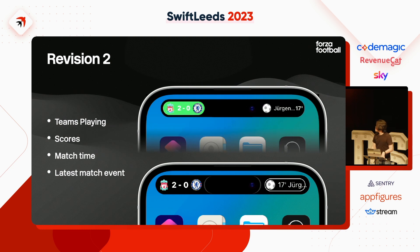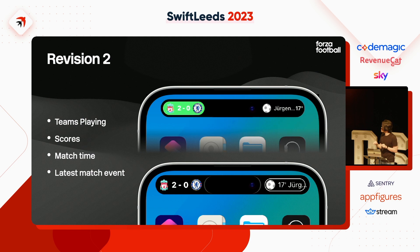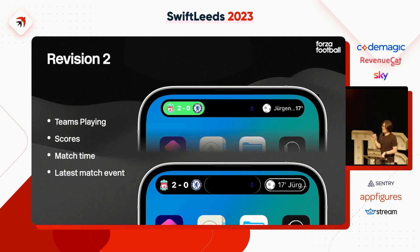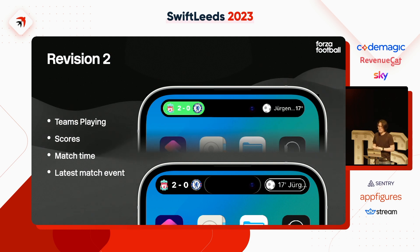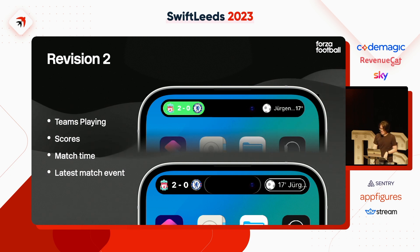Revision two: we updated to match the capsule rounded corners to look better. But this has a big problem — we want to show a lot of information, but it covers up the time and the battery. For football matches, they play around two hours. You can imagine having a live activity covering the user's time for two hours — it's not great. So we need to move to the next revision.